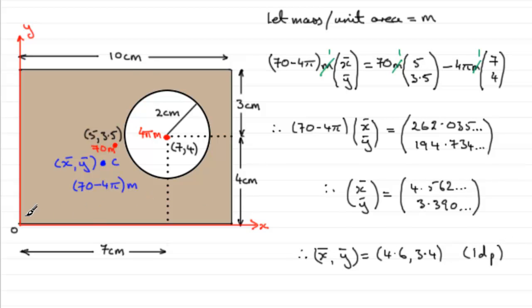You can see then that it's roughly in the right position. I hope that's given you an idea how to do problems where we remove particular shapes from a lamina. Instead of adding the masses on, we end up subtracting the masses, and then ending up subtracting the moments.